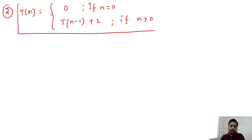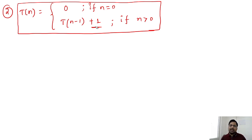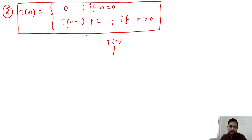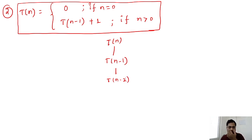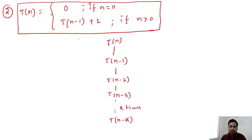As per the recursion tree method, always remember: rather than writing the constant 1 repeatedly, it is better to use the function directly. The first node is T(n), then T(n−1), then T(n−2), then T(n−3), and so on up to T(n−k) if running for k times. The subtraction pattern is: at level 1 it is n−1, level 2 it is n−2, level 3 it is n−3, and at level k it is n−k.